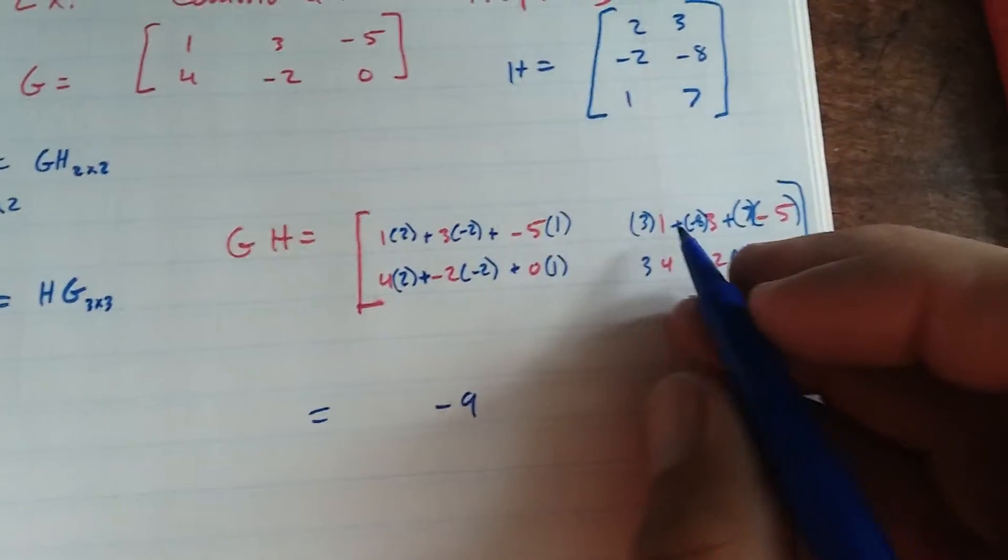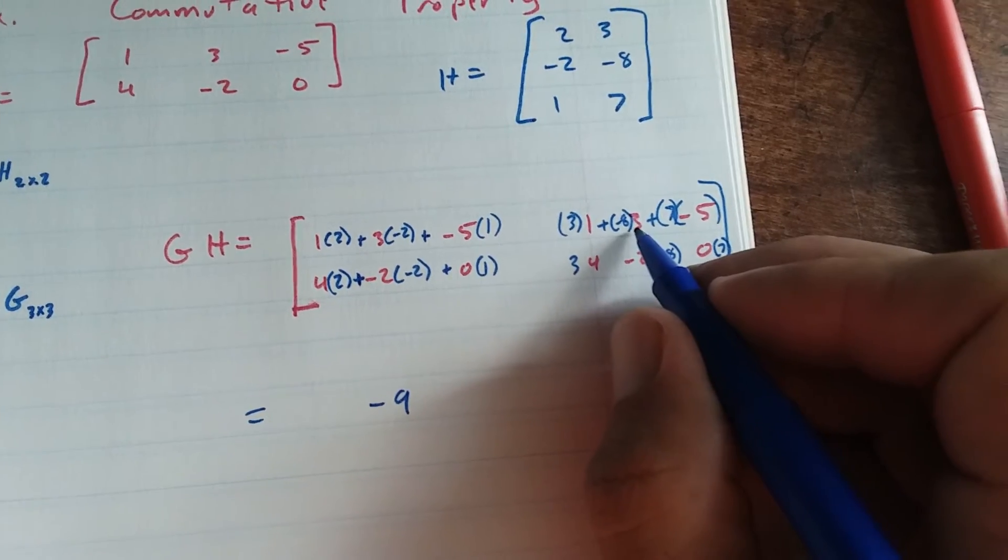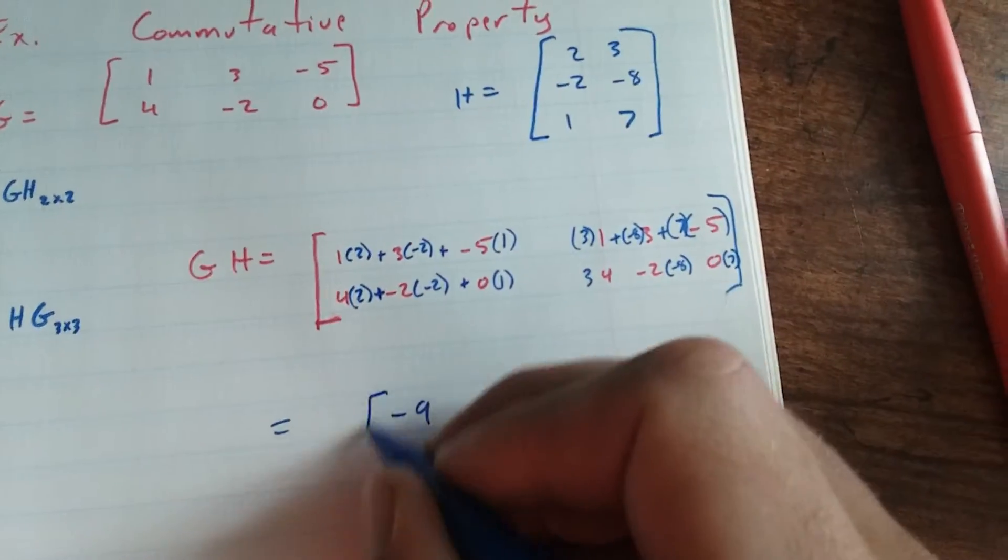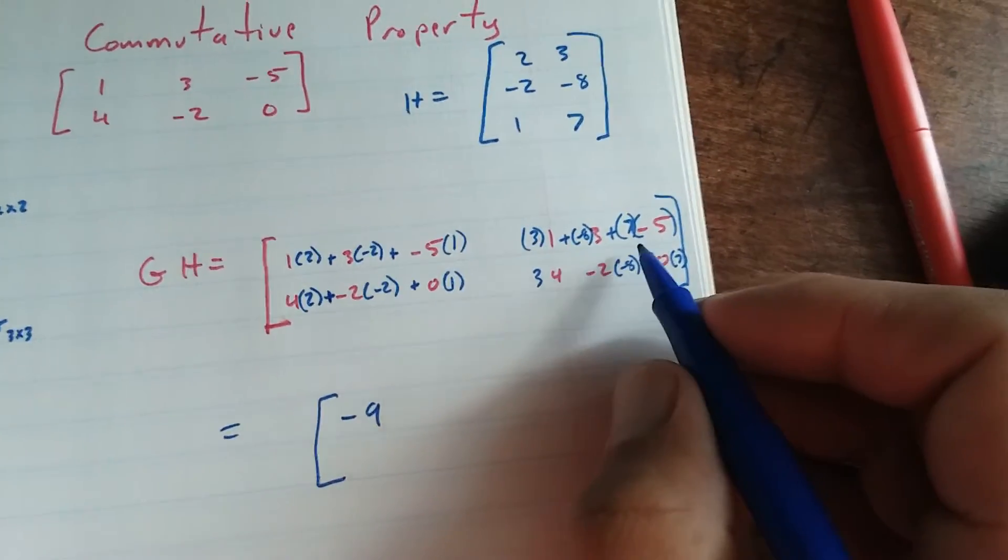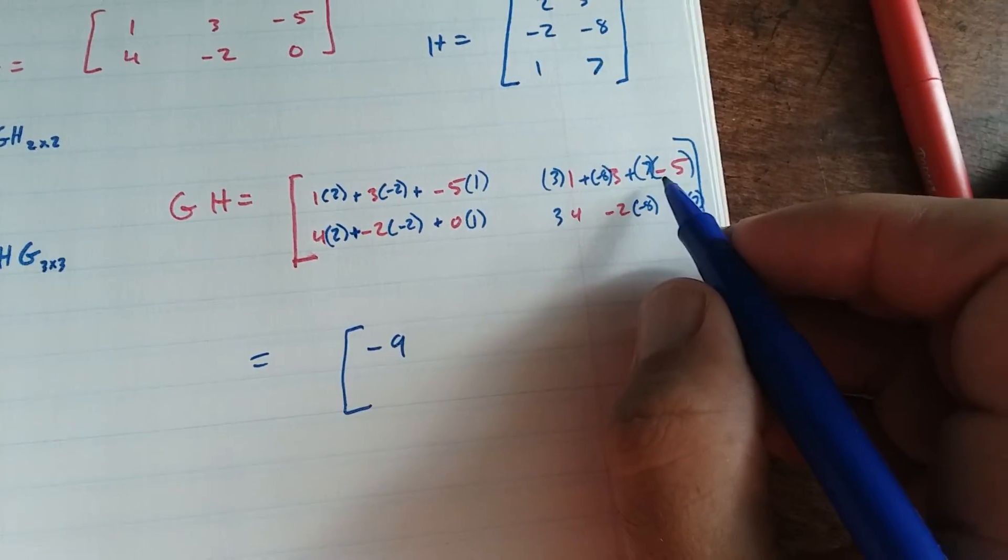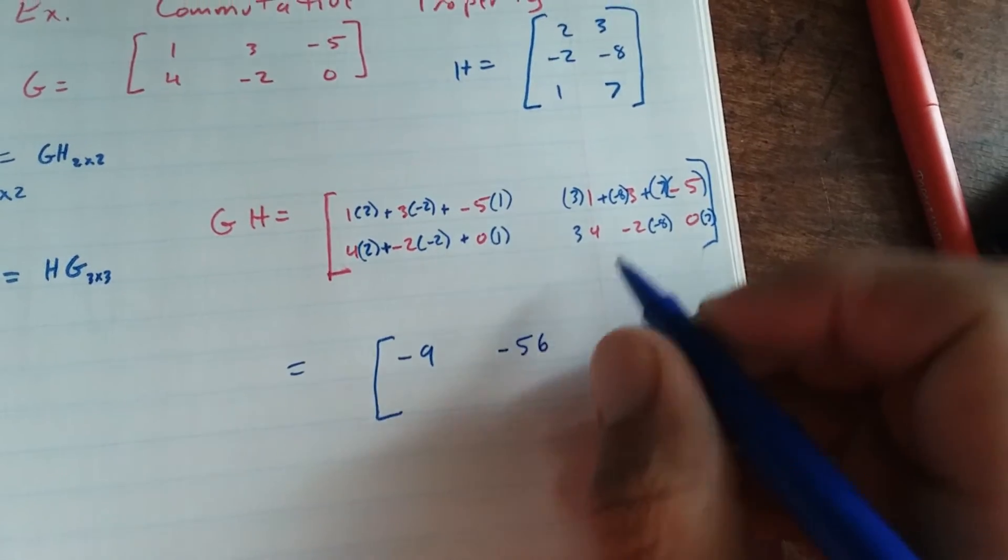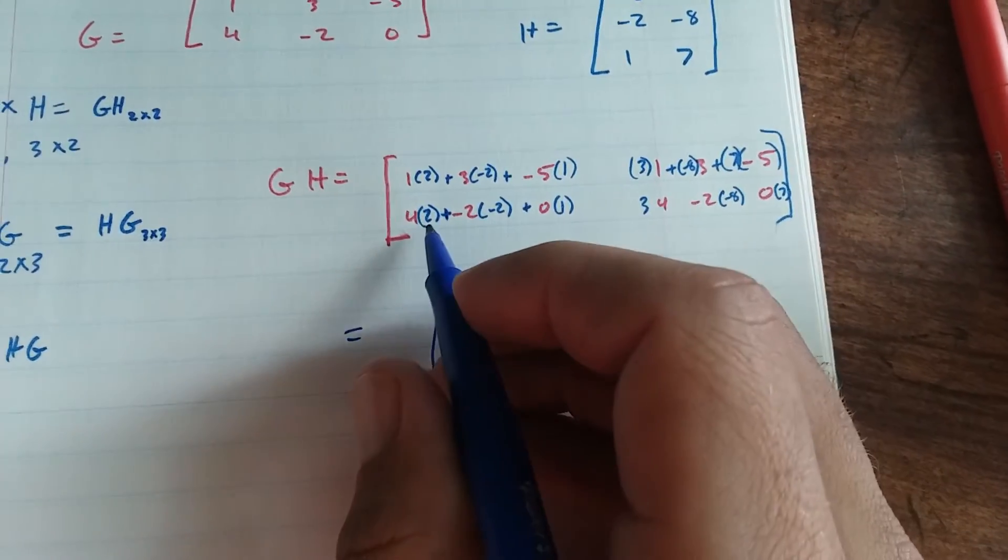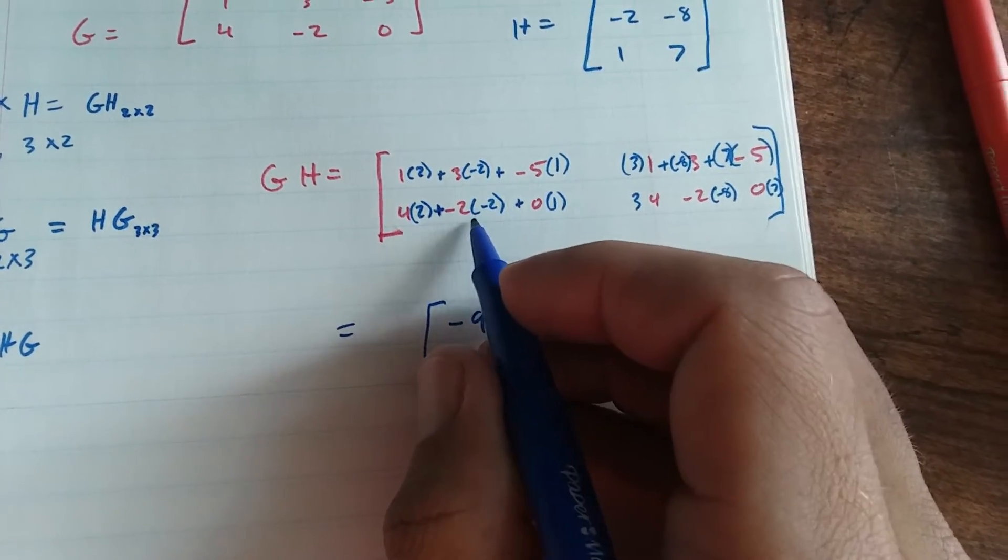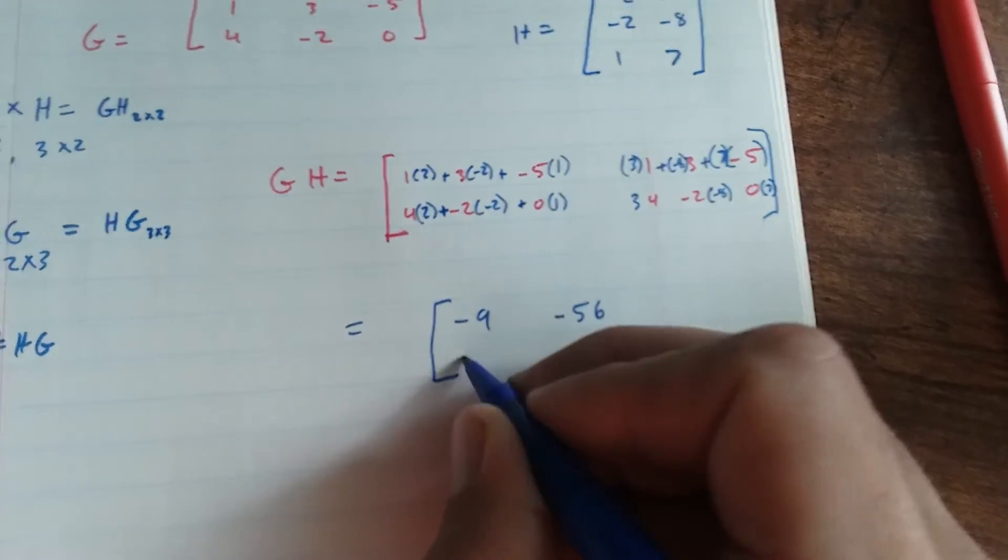And then I have 3 minus 24, minus 35, which is negative 56 here. Here I have 8 plus 4 is 12, plus 0 is 12.